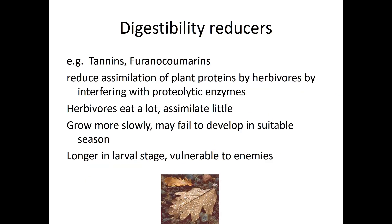The next category is digestibility reducers. These might be tannins or furanocoumarins — furanocoumarins can actually fall into multiple categories. They reduce assimilation of plant proteins by herbivores, keeping herbivores from being able to digest plant tissue. They do this by interfering with enzymes or detoxification processes inside the herbivore's digestive system. So the herbivore can eat a lot but doesn't actually convert it into body tissue — like eating a bunch of really terrible food. That means they grow more slowly and may fail to develop in a suitable season.